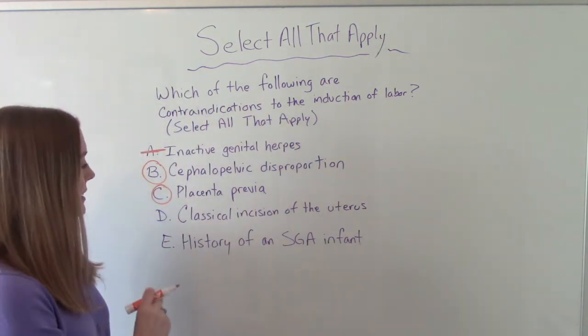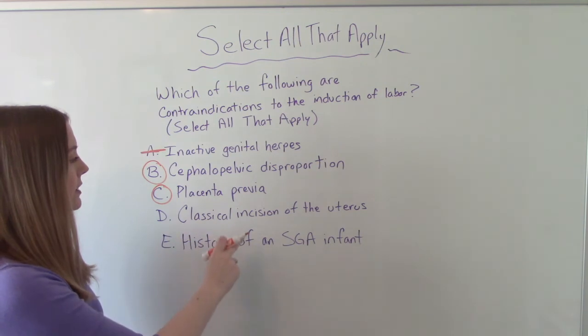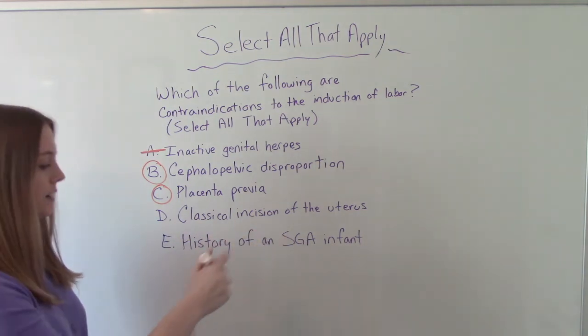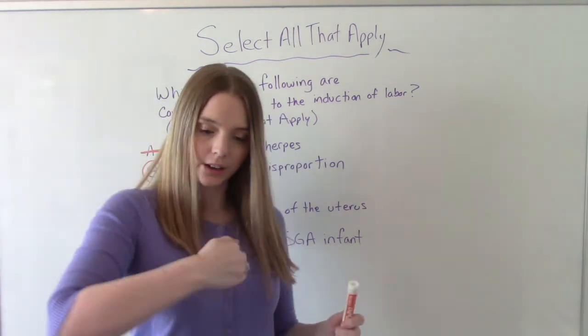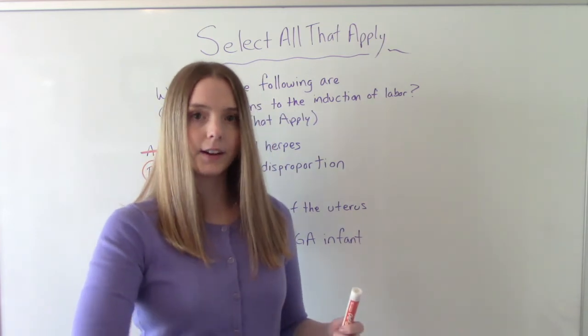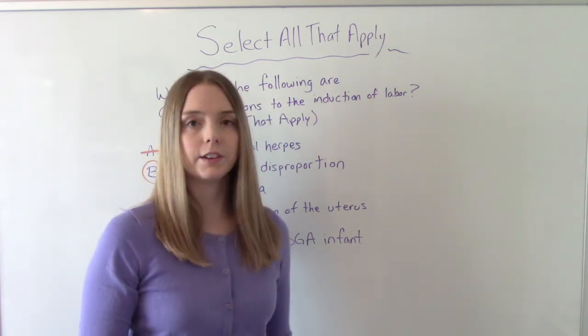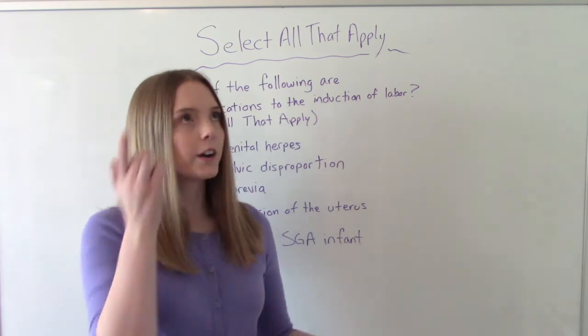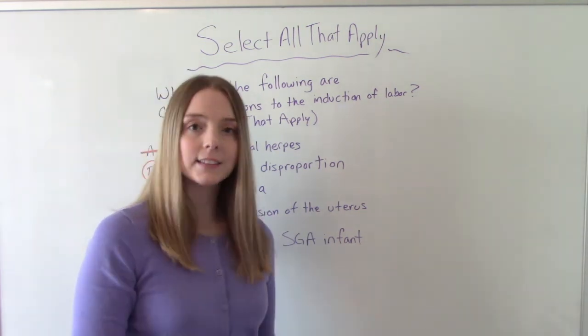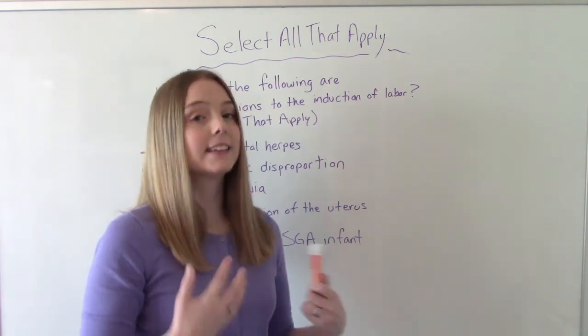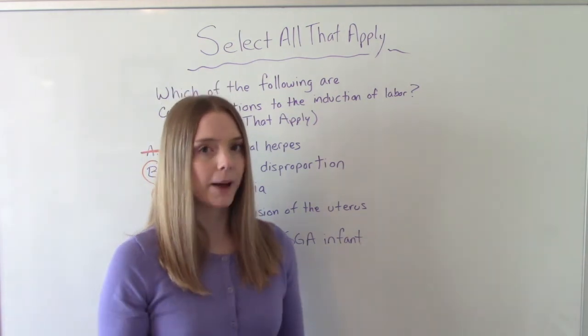Now we'll move on to D. Classical incision of the uterus. So a classical uterine incision is a vertical, so up and down incision, probably from like a previous surgery or a previous c-section, right? So we already know, if somebody's had a classical incision, it's not safe for them to have a VBAC, right? They can't have a vaginal birth. It's not safe.